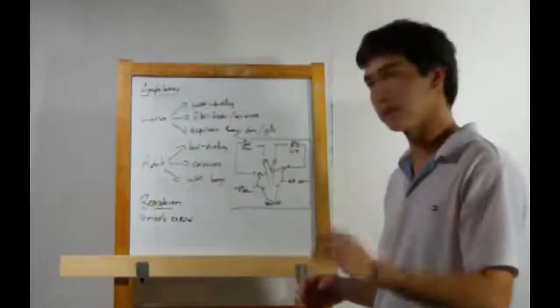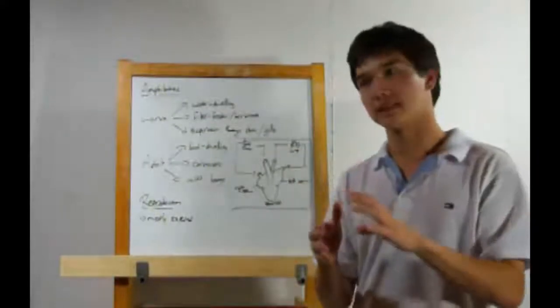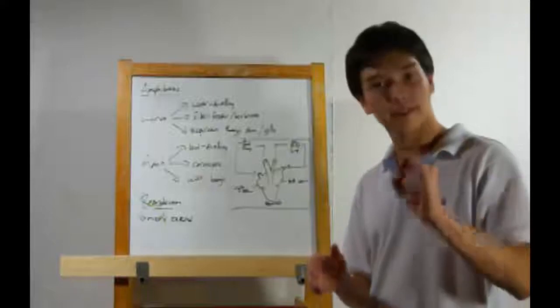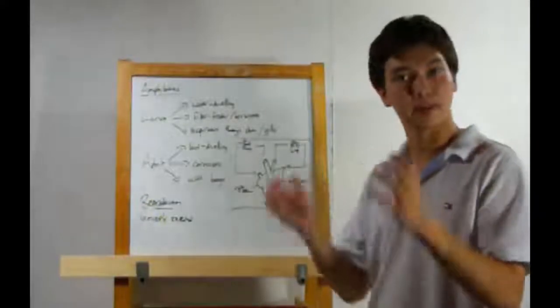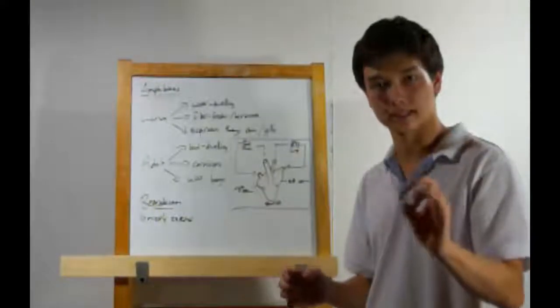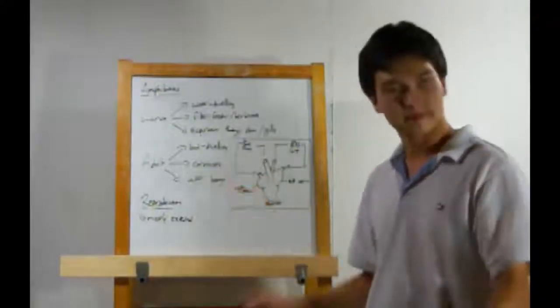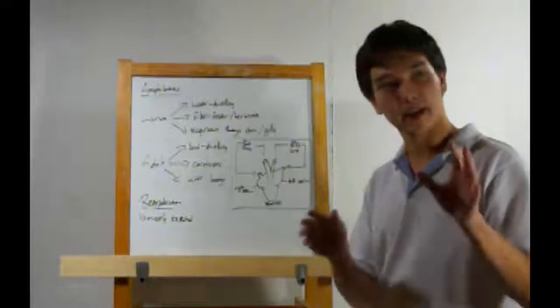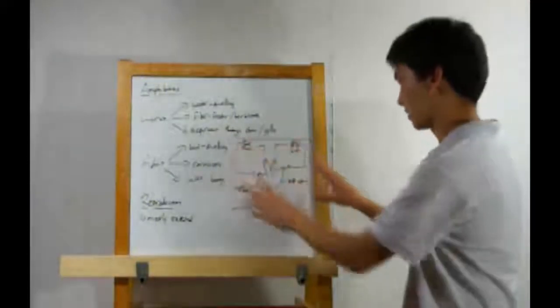The lungs play a major part. There have been some major changes to the circulatory system. First off, it's closed, and again, that means blood always stays in the circulatory system. Materials will diffuse in and out, but blood stays in the system. But it's two-loop now, and also the heart has become three-chambered. Let's look at it over here.